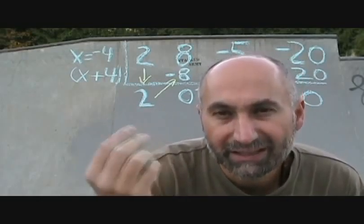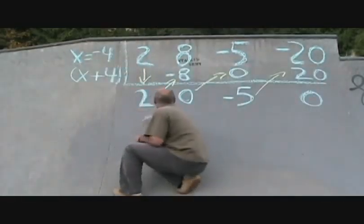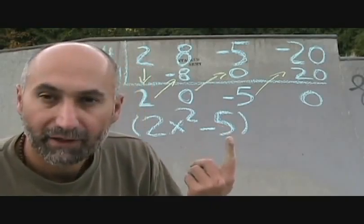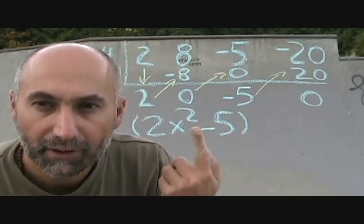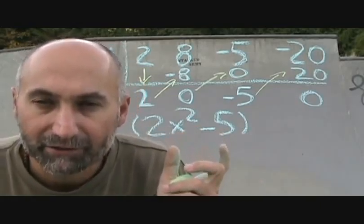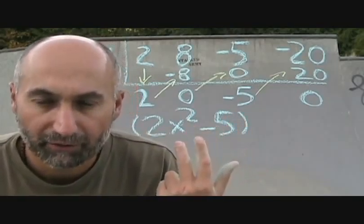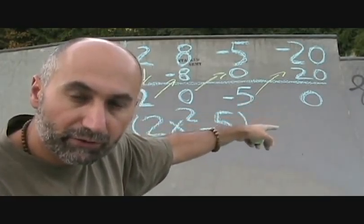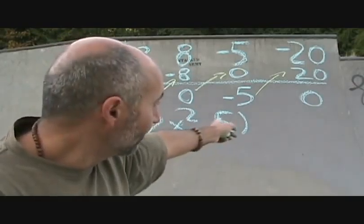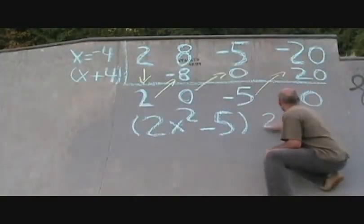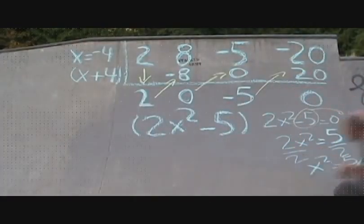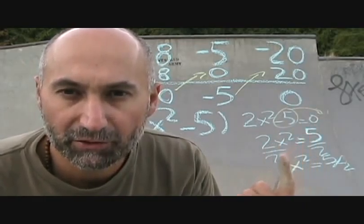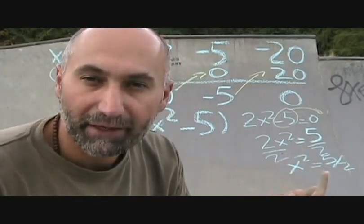The quotient we have now is 2x squared minus 5. We're down to a quadratic — something to the power of 2. We can factor this using difference of squares, the quadratic formula, or just solve it by setting it equal to zero. Setting 2x squared minus 5 equal to zero, bring the 5 over and divide both sides by 2, giving x squared equals 5 over 2.